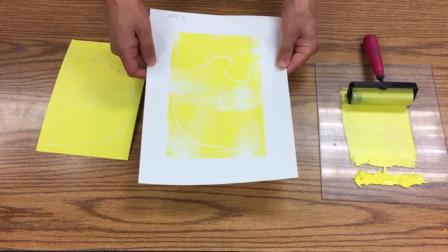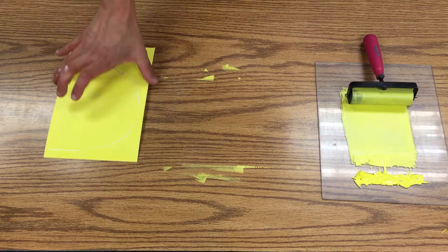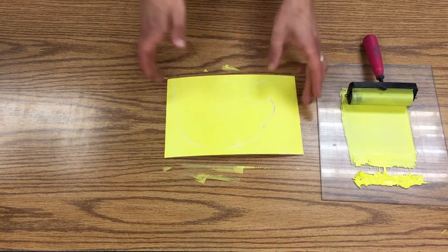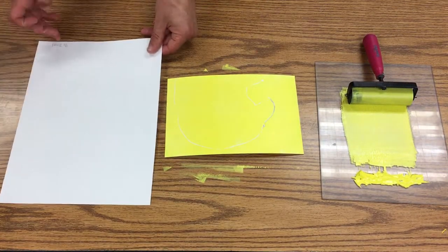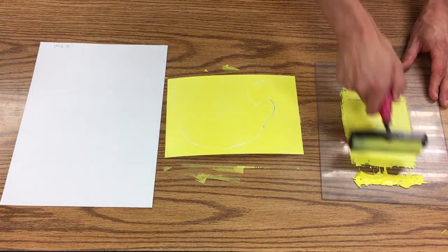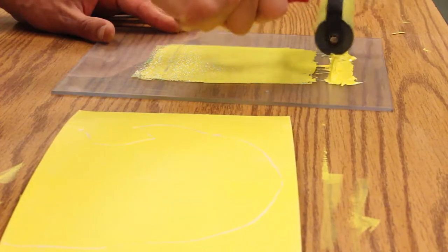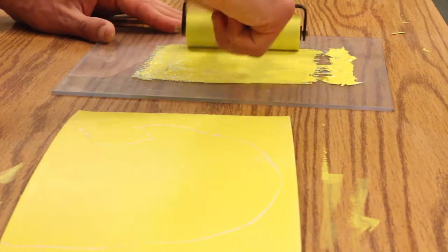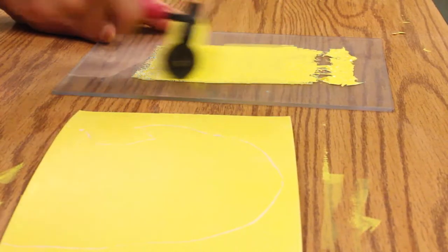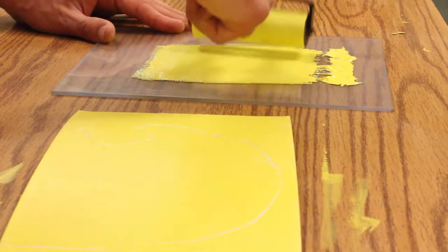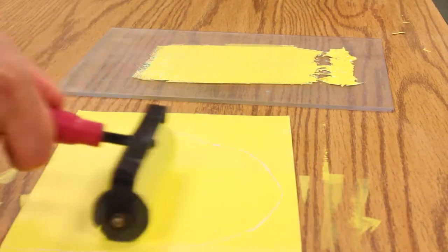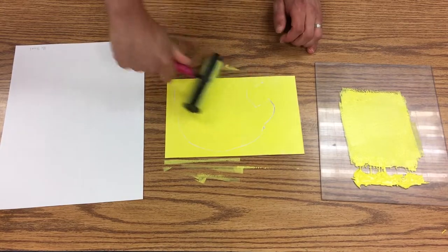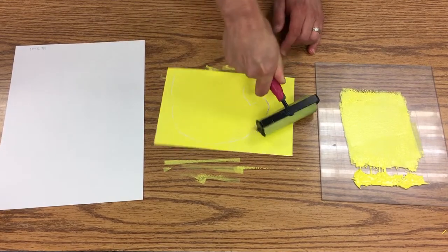And then I have my first print. Since this is printmaking, we can make multiple copies. I've already written my name on these papers, so that's one step that's out of the way. I want to make sure that I get this all evenly covered.